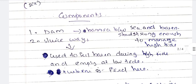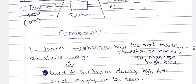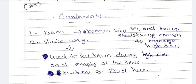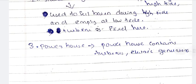The main component is a dam, which is a strong barrier. The sluices, when the turbine is fixed, that path is fixed. It is used to fill the basin during high tide and empty it at low tide. The turbine is fixed here. The powerhouse is where we collect and gather the energy.